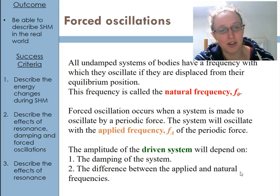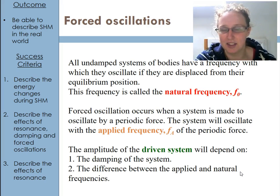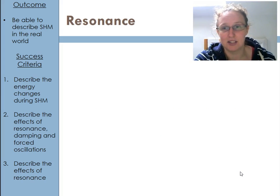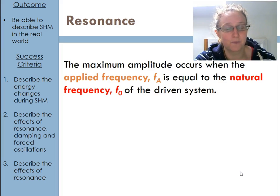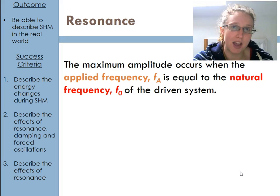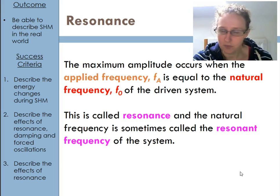If the applied and natural frequencies are very, very close, we can get something called resonance. I'm forcing it to oscillate at the frequency it's naturally designed to go at, which means we get a really big amplitude out. We get our maximum amplitude when the applied frequency equals the natural frequency of the system — that's what we call resonance, or the resonant frequency.